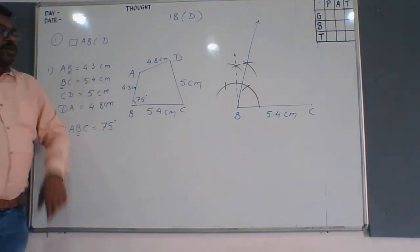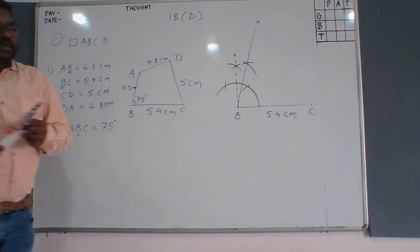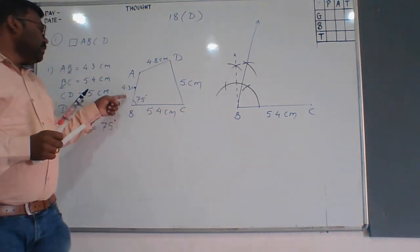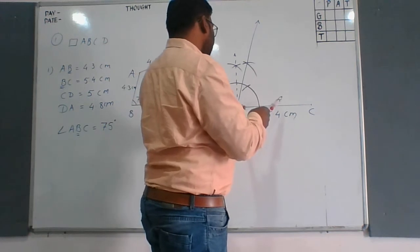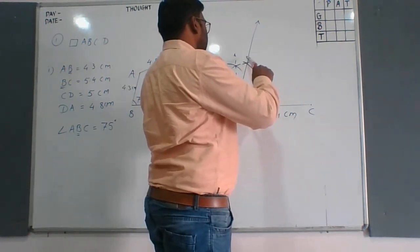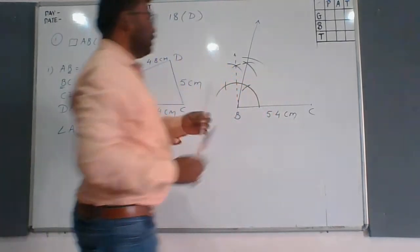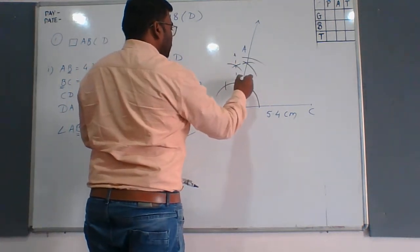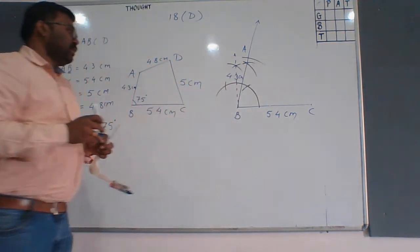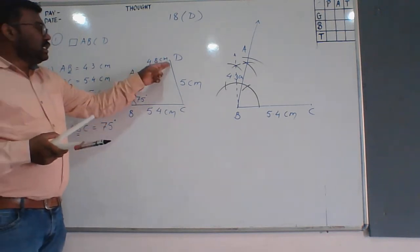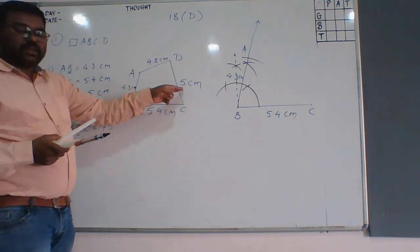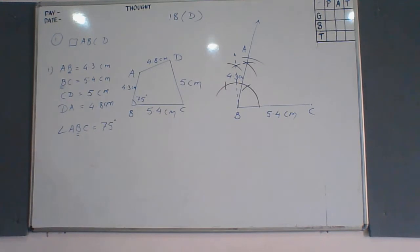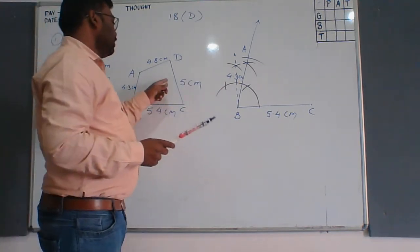After constructing the angle, measure AB of 4.3 cm in the compass and cut an arc on the 75-degree ray from point B. Name this point A. The length of AB is 4.3 cm. Then CD is 5 cm, so take a radius of 5 cm in the compass.